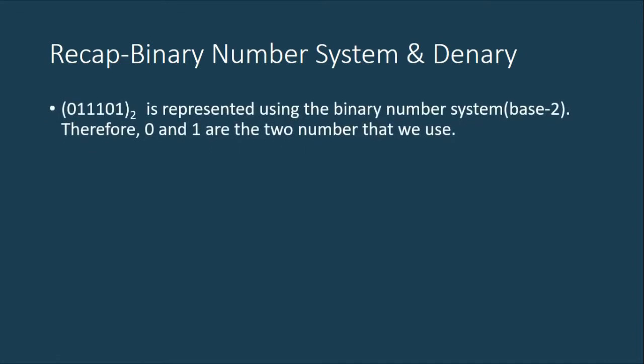This is about the binary number system and the denary number system. For instance, consider 011101. As you can see, we have a base 2 here, which means that it is represented using the binary number system, which is base 2. Therefore, the two numbers that are used combination of values are 0 and 1.